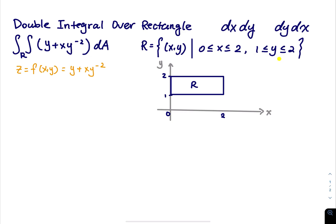Here is how I picture this problem. The integrand y plus xy to the negative 2 is a function z equals f(x,y). Imagine f(x,y) as a piece of paper you are holding over a table — it's three-dimensional. The shadow on the xy plane, which is your table, is a rectangle where x is between 0 and 2, and y is between 1 and 2.